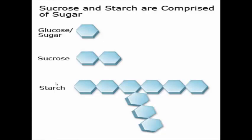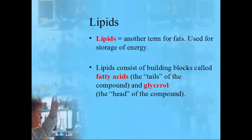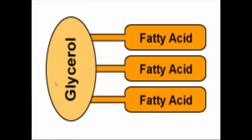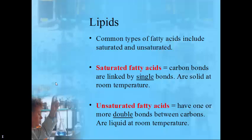A monosaccharide is one sugar unit; sucrose has two; starch is a complex sugar with a very particular shape. Next, lipids — another term for fats — are used to store energy. Energy from food that isn't used right away is stored in lipids. Lipids are made up of building blocks called fatty acids, which form the tail of the unit, and a glycerol, which forms the head. A lipid with three fatty acids is called a triglyceride.